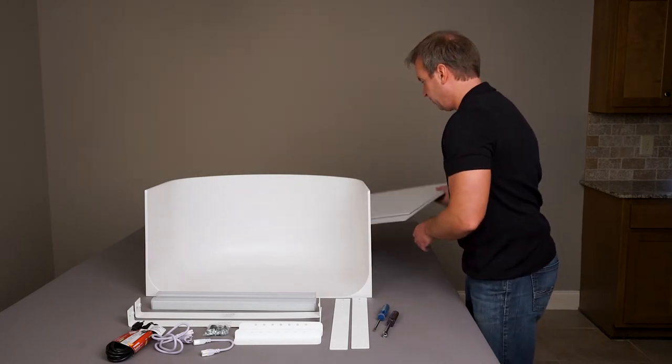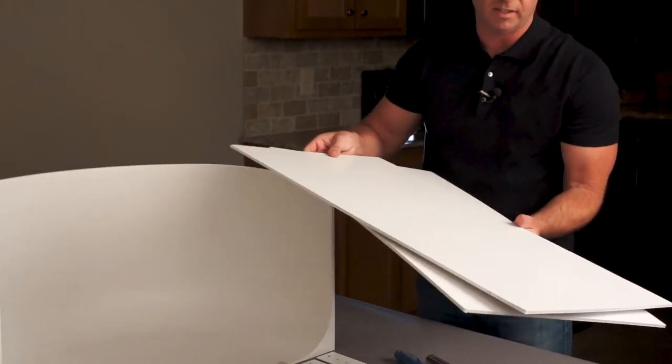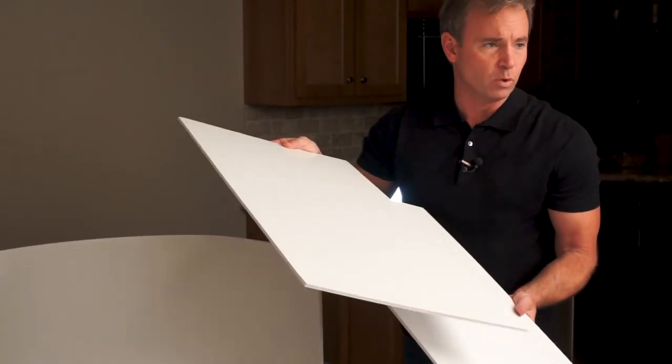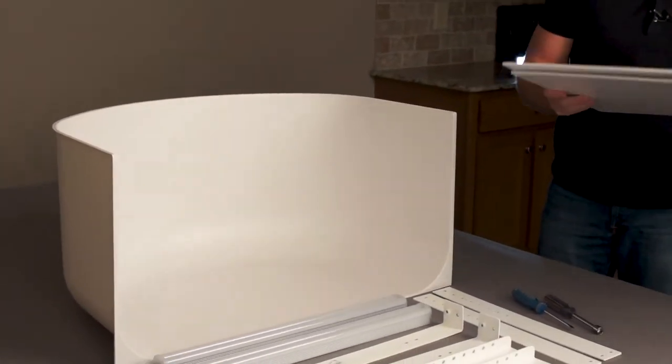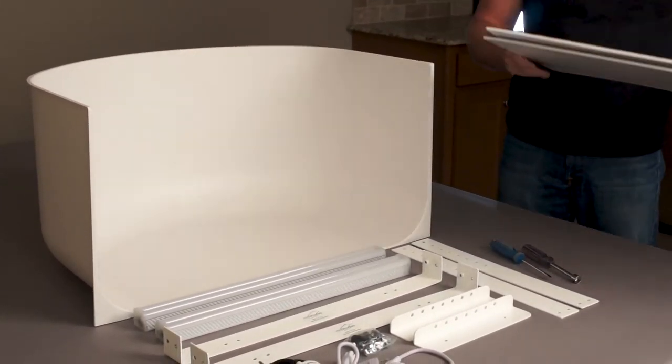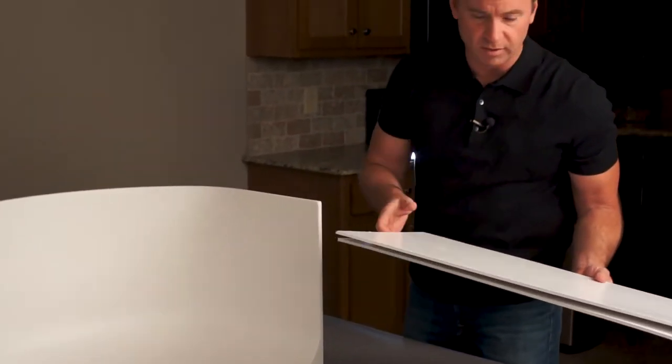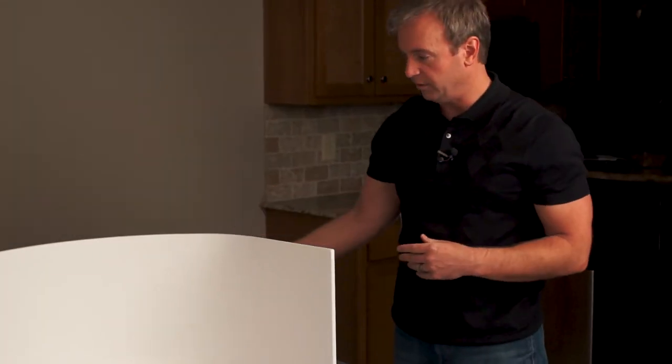We've also got, at the back here, two 16x32 foam core reflectors. Now these are actually going to be used as the roof of the studio. It enables you to take those off and shoot down into the studio, which is something we're not able to do with most of the MyStudio units.